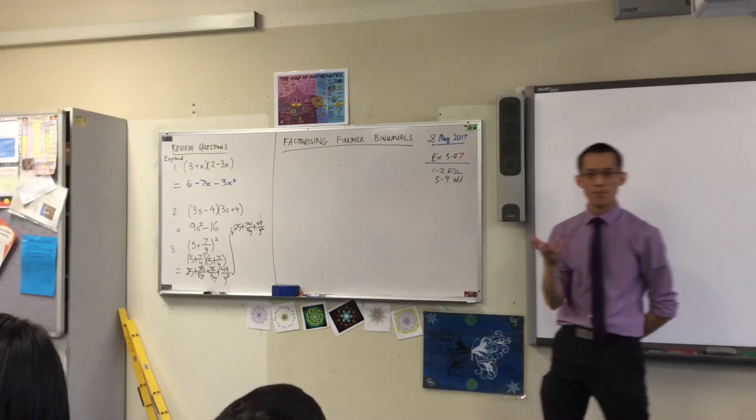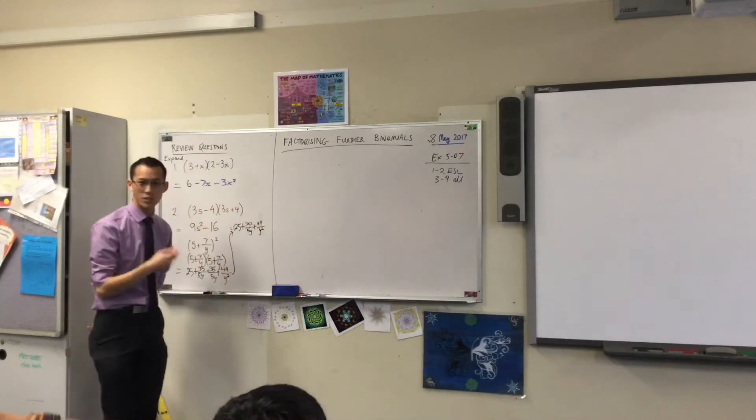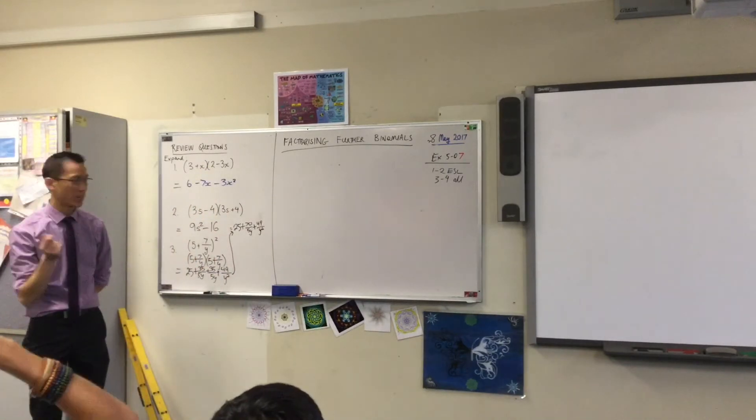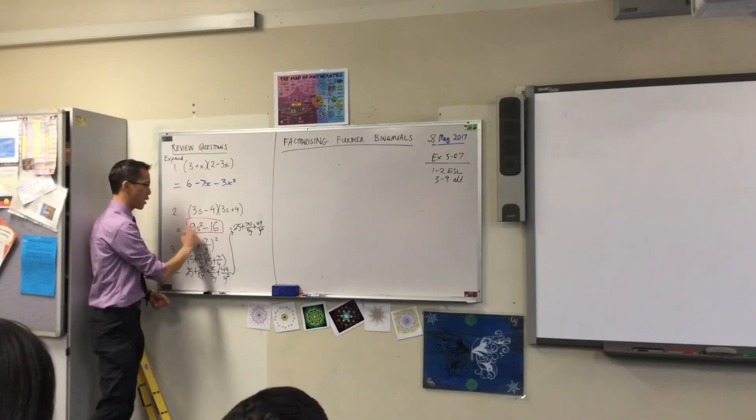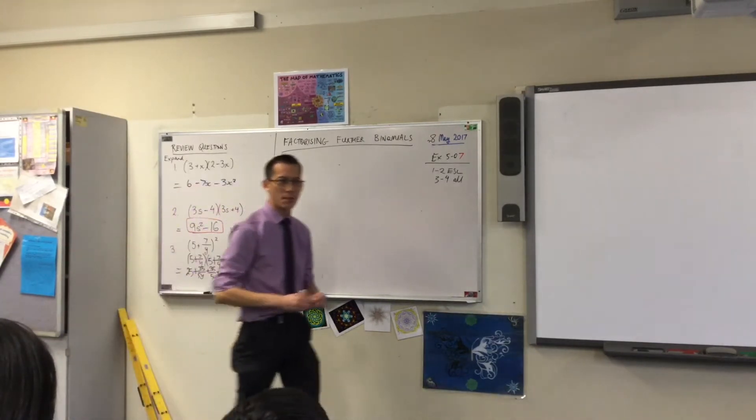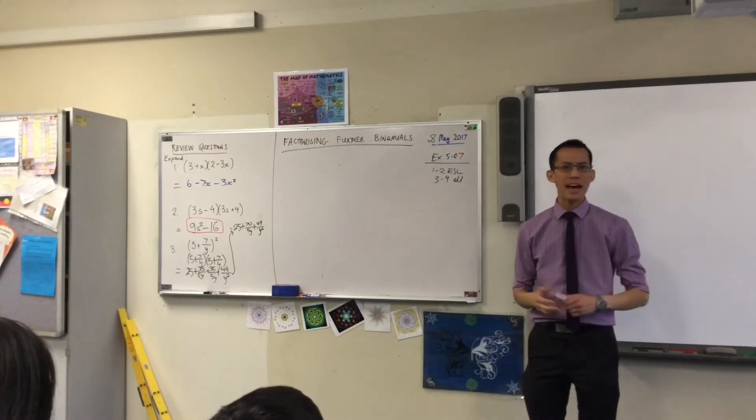We'll do them in the order they appear on the board, which means number two first, which is actually quite sensible. In some ways, it's the one you can do the quickest. Its answer certainly is the easiest. 9s squared, take away 16. Before you tell me whether that's right or wrong, it's just been written down directly. How's that?